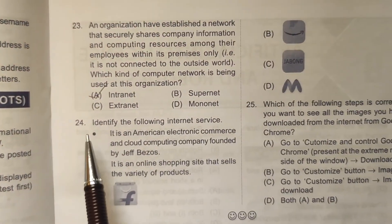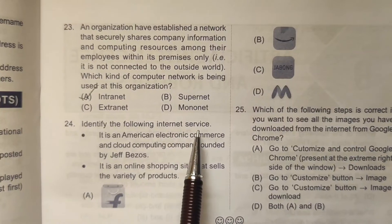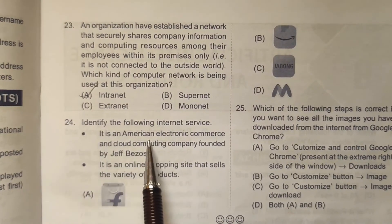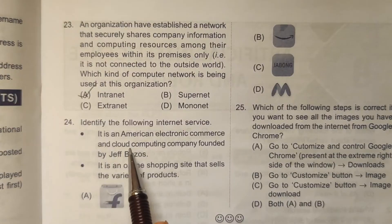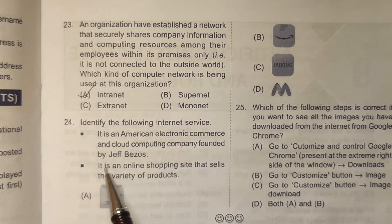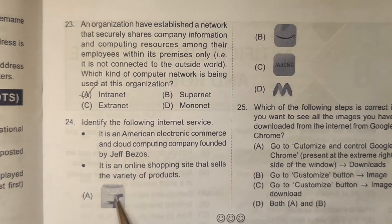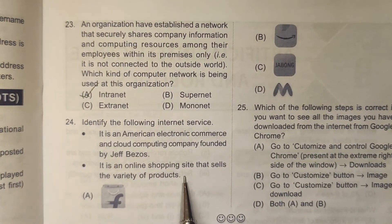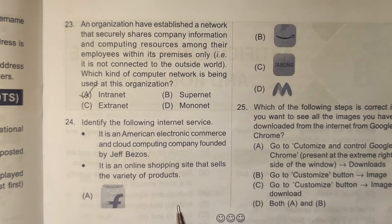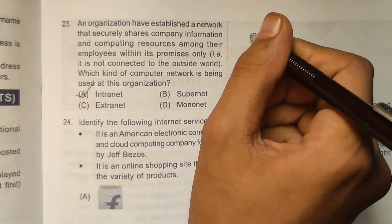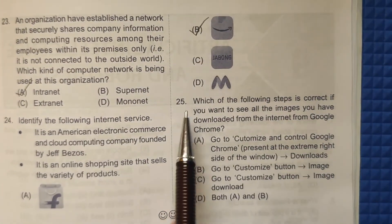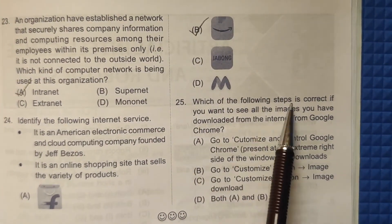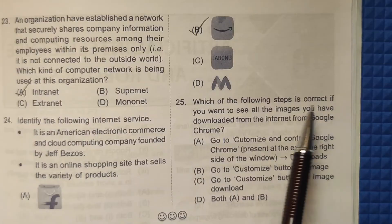Twenty-fourth question: Identify the following internet service — it is an American electronic commerce and cloud computing company founded by Jeff Bezos, and it is an online shopping site that sells a variety of products. It is Amazon. The correct answer is option B.